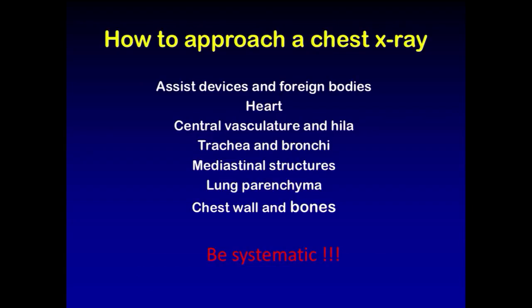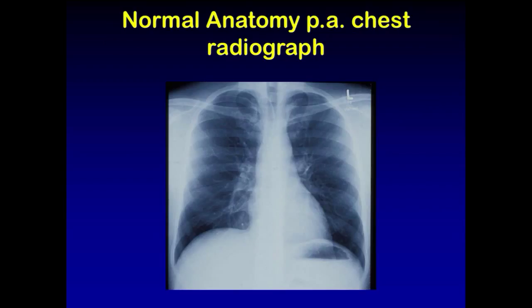In order to interpret and analyze a chest radiograph or chest x-ray, it is very helpful to be systematic. You either start in the center and describe the structures outward, or you start in the periphery and you describe your structures towards the center. First of all, we need to identify what is right and left. Notice that each radiograph has a label indicating the side of the patient. Now let's analyze our structures and start in the center.